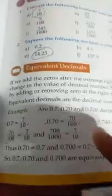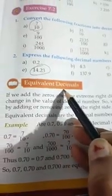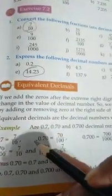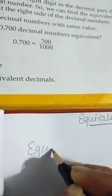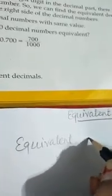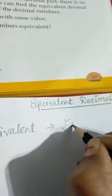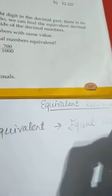Today we will do the topic equivalent decimals. Equivalent decimals are the decimals which are having the same values. The word equivalent means equal value — decimal numbers whose value is equal, same value.